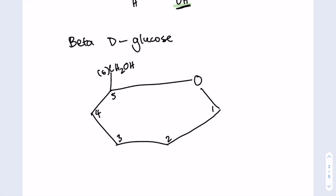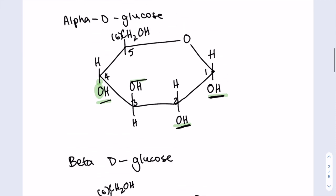So in beta-D-glucose, the pattern is OH on the bottom, OH on the top, OH on the bottom, and then OH on the top. So it's basically alternating in beta-D-glucose, whereas in alpha-D-glucose, it's always on the bottom except for carbon-3.